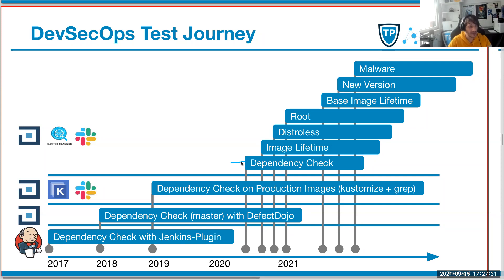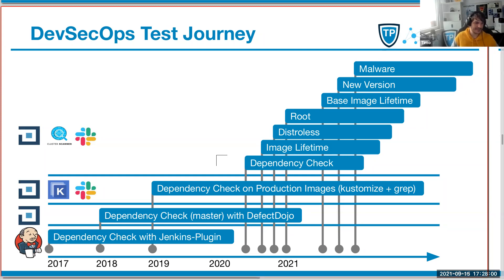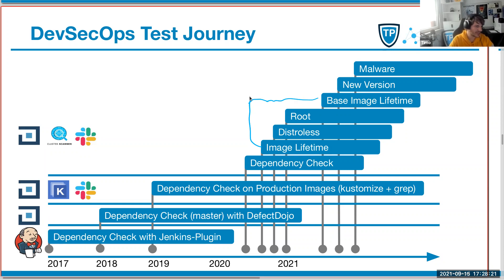Beforehand there was a lot of findings, and now there is zero findings and no information at all because they patch already by themselves. They recognized the problem, implemented DependaBot to get pull requests for new dependencies in the code. And now there is nothing coming - nothing. I thought already, is there something broken? And I researched for half a day and figured out, no, there's nothing broken - you're just patching well. That is a success story for the dependency check. Where I'm struggling is the image lifetime - they don't take that so serious. I'm working on that. I've implemented this tool at different customers, and at some organizations there are teams which are not taking it seriously.